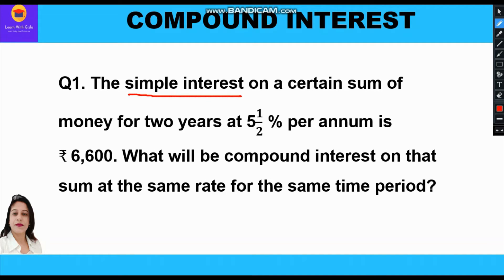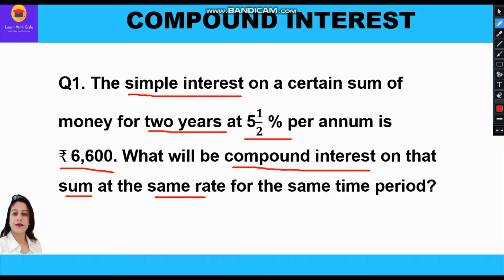So here, simple interest is rupees 6600 on a certain sum of money — that is our principal — for two years, and at five and a half percent per annum as the rate of interest. We have to find the compound interest on the same sum at the same rate and for the same time period.